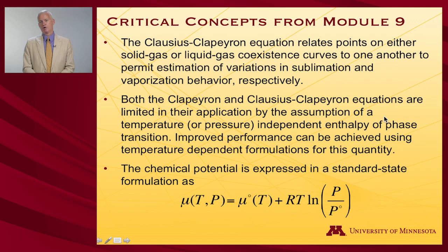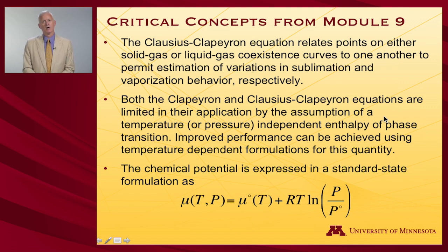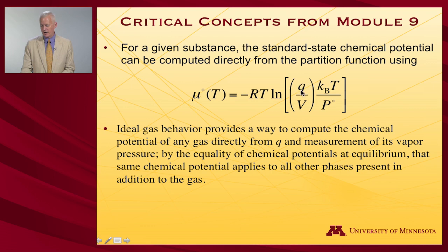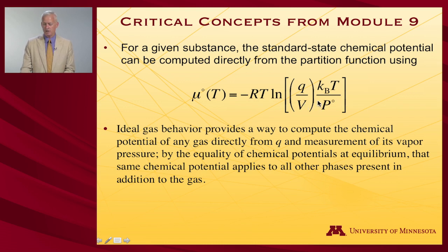Finally, we connected the chemical potential to the partition function and were able to express it as a standard state chemical potential — which can be derived from the partition function — plus a term representing the variation in pressure relative to a standard state pressure. That formula is shown at the bottom of the slide. For a given substance, the standard state chemical potential can be computed directly from the partition function. We actually computed some partition functions for a halogen gas in a previous module. The standard state pressure can be chosen, and we do have a means to get at these quantities from measurement of vapor pressure assuming ideal gas behavior.